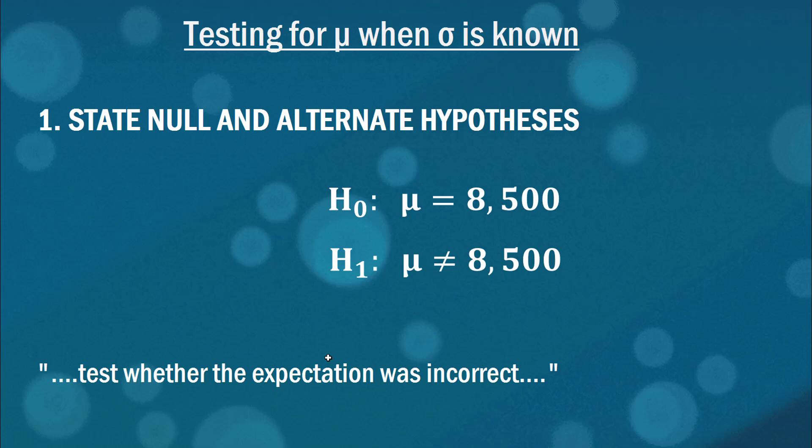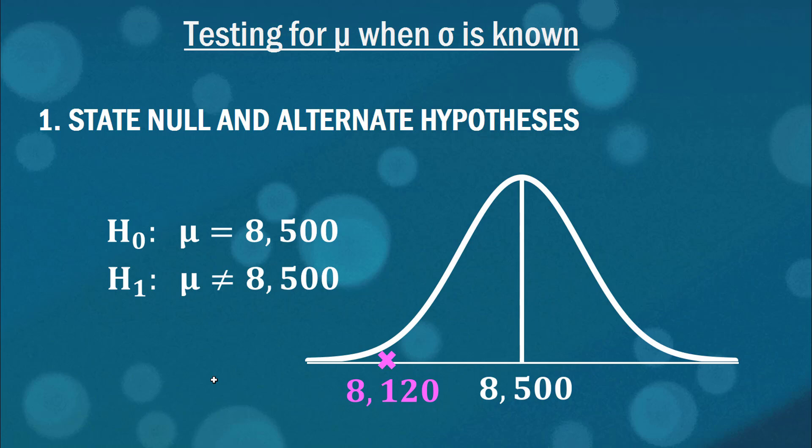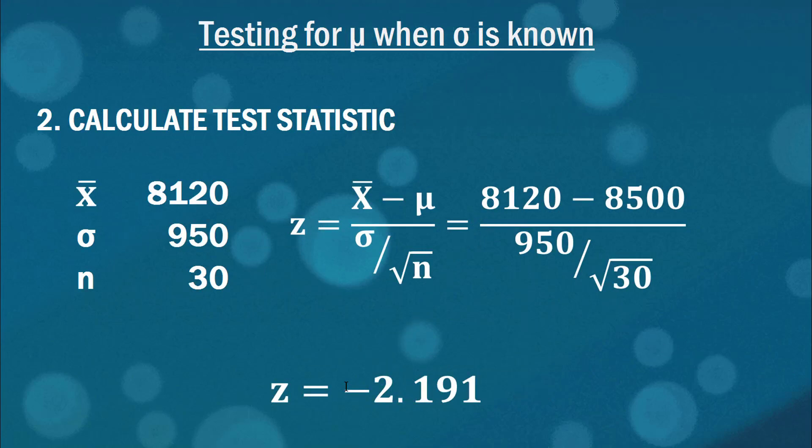So I'm going to do this one a little bit quicker, but here's the null and alternate hypotheses, appreciating that the alternate hypothesis is simply that it's not equal to 8,500. That's what we're seeking evidence for in this case, so it goes in our alternate hypothesis. So we would be rejecting that null hypothesis either way, whether our sample mean is significantly more or significantly less than 8,500. And our sample mean we got was 8,120. So is that far enough away from 8,500 for us to reject that null hypothesis? Well, let's find out. The first thing we can do is calculate the test statistic as we did last time. There's x bar, sigma and n, and we find a z value of minus 2.191.